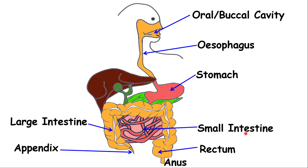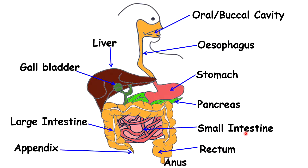There are also some very important parts, and those include the pancreas, the liver, the gallbladder, and also the bile duct. You are going to see the importance of these when we go through each part.